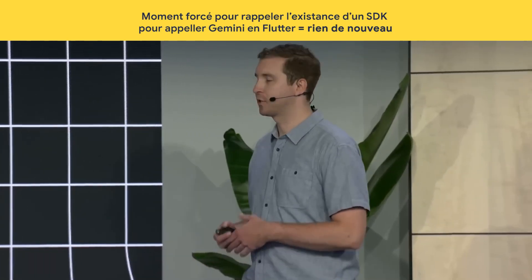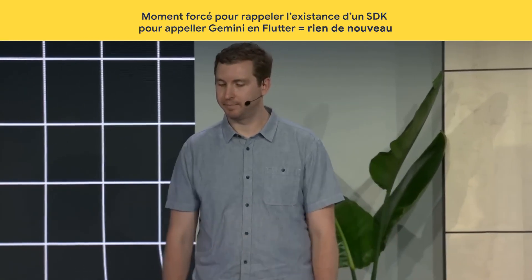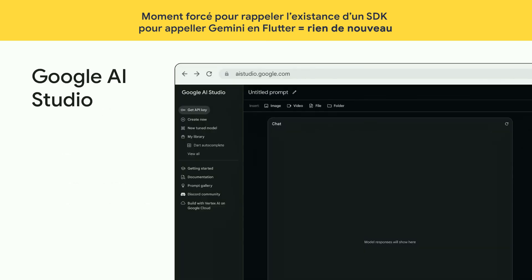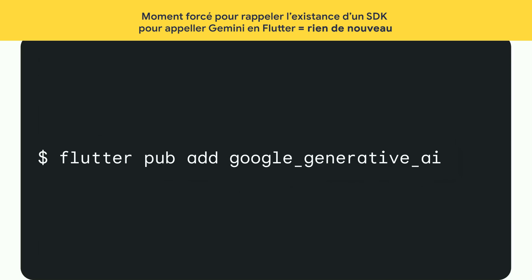Gemini is Google's most capable family of language models. We launched the Google AI Dart SDK earlier this year. You can easily add text generation, summarization, chat, and more with minimal setup, and it lets you draw on the full family of Gemini models. The best place to get started is Google AI Studio — it's a browser-based IDE for prototyping with generative models. Once you've got your prompt ready, it's really easy to integrate it into your Flutter app.